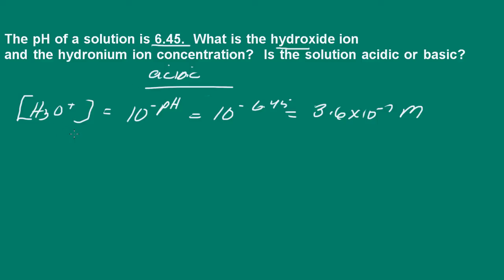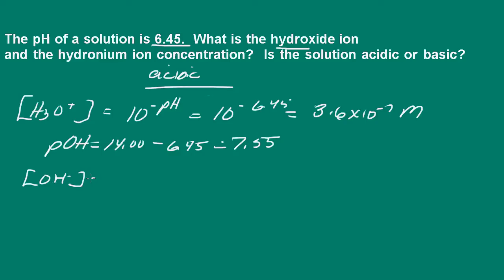I can determine the hydroxide ion concentration two different ways: I can use Kw and solve for hydroxide ion concentration, or I can determine the pOH and then find the hydroxide ion concentration from that. The pOH is 14 minus 6.45, which gives us 7.55. The hydroxide ion concentration would then be 10 to the negative pOH, which is 10 to the negative 7.55. Using the anti-log function on my calculator, I get 2.8 times 10 to the negative 8 molar.